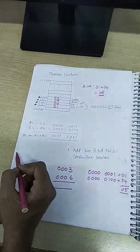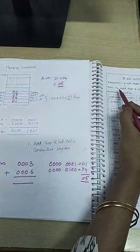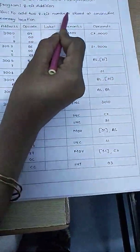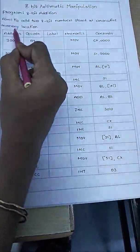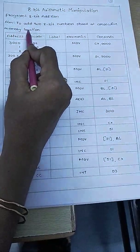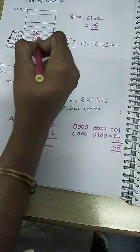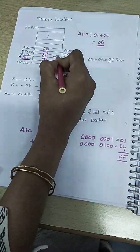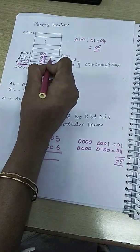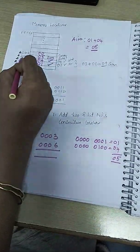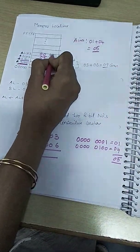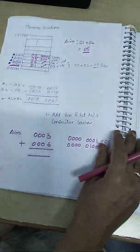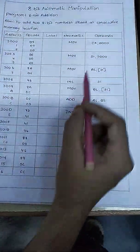The aim is to add two 8-bit numbers stored in consecutive memory locations. Location 2000 holds the first data, 2001 holds the second data, 2002 is where we store the sum, and 2003 is where we store the carry. Now let us start with the program.